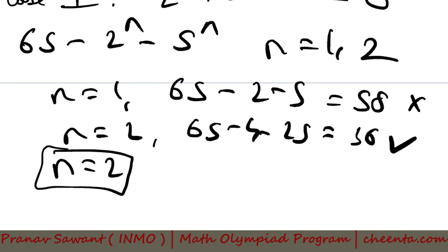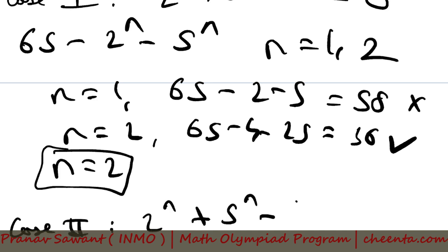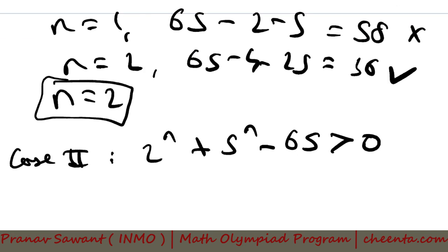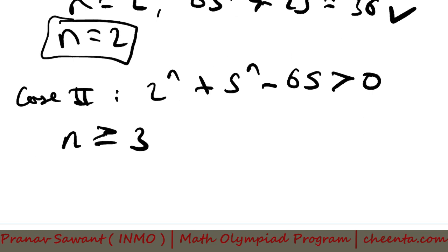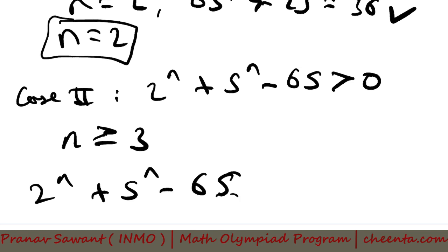So let's move on to Case 2, where 2^n + 5^n − 65 is actually greater than 0, so the modulus opens as positive. This obviously happens at n ≥ 3. So we will have the expression 2^n + 5^n − 65 without the mod symbol. And if we just reduce this mod 5, we will get this as 2^n mod 5.